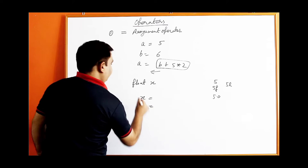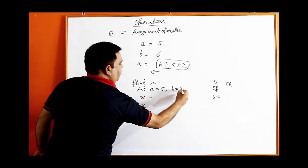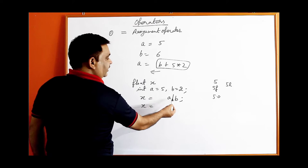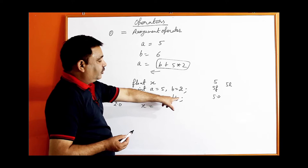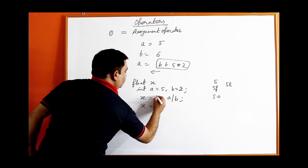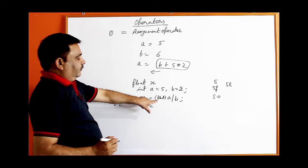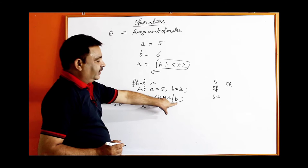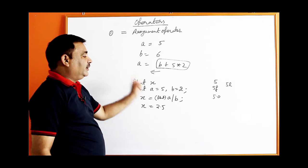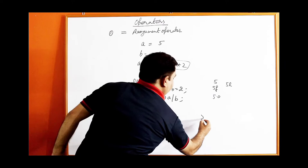If you have integer variables a equal to 5 and b equal to 2, and write x equal to a divided by b, you cannot append f or .0 to variables. Instead you have to use type casting — write (float) before a, so a will be treated as float. Float divided by integer will be converted to float and you will get the exact result 2.5. This is called explicit type casting.